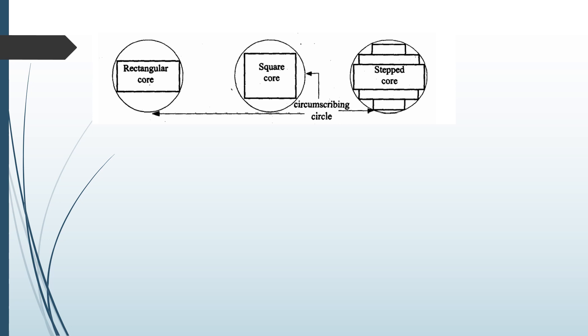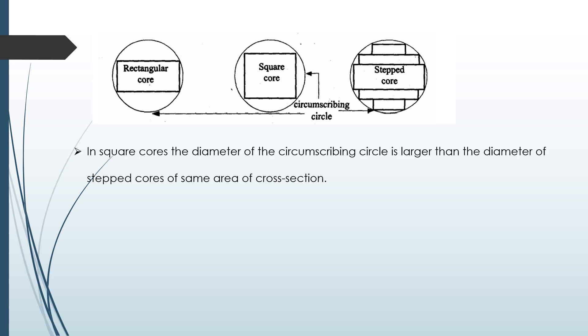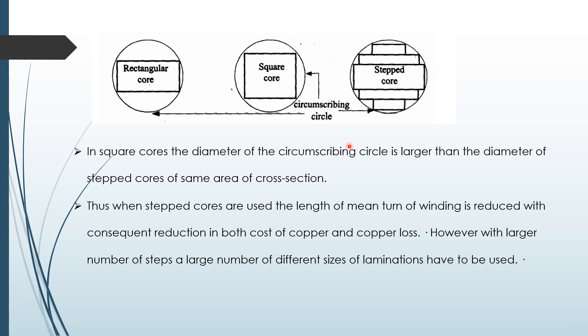In a square core, the diameter of the circumscribing circle is larger than the diameter of a step core of the same area of cross section. Thus, when step cores are used, the length of the mean turn of winding is reduced, with a consequent reduction in both the cost of copper and copper loss.